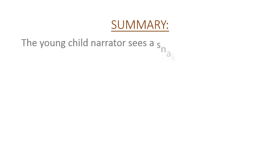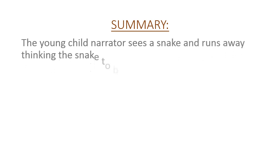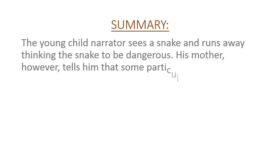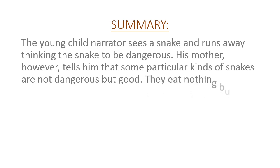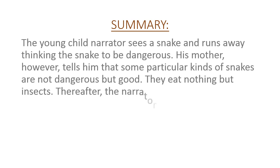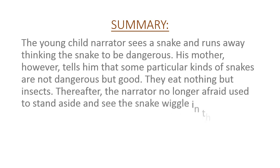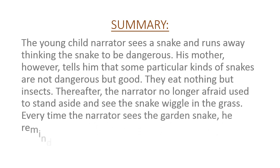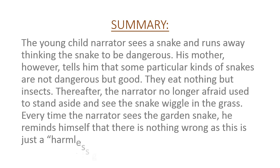Summary of the poem: The young child narrator sees a snake and runs away, thinking the snake to be dangerous. His mother, however, tells him that some particular kinds of snakes are not dangerous but good — they eat nothing but insects. Thereafter, the narrator, no longer afraid, used to stand aside and see the snake wiggle in the grass. Every time the narrator sees the garden snake, he reminds himself that there is nothing wrong, as this is just a harmless garden snake.